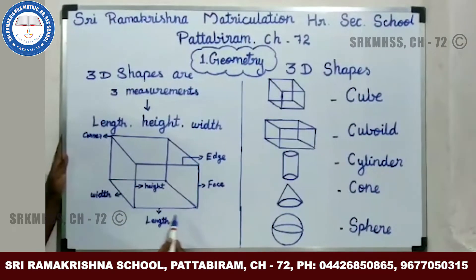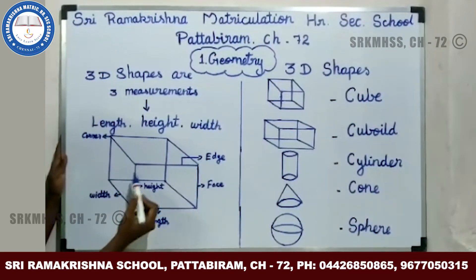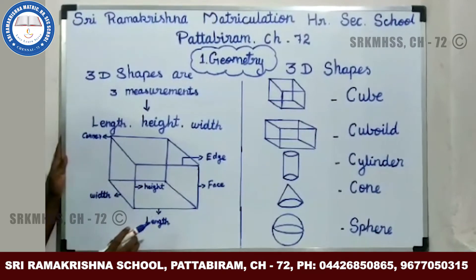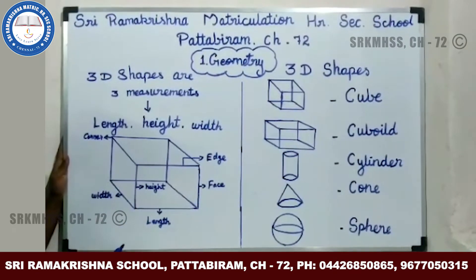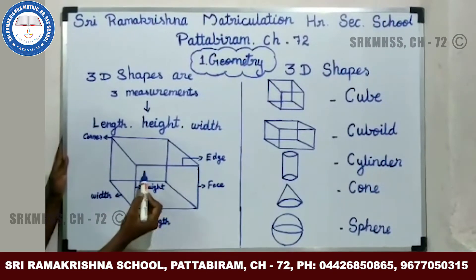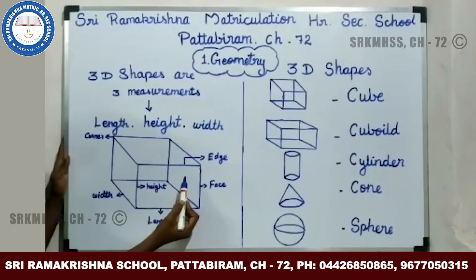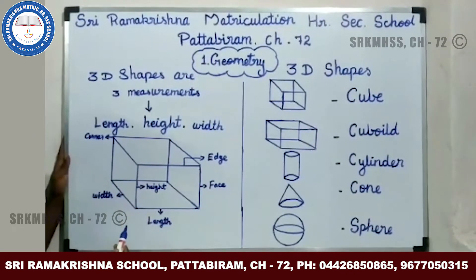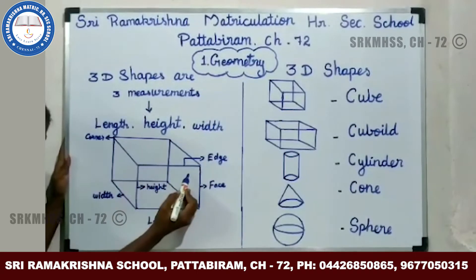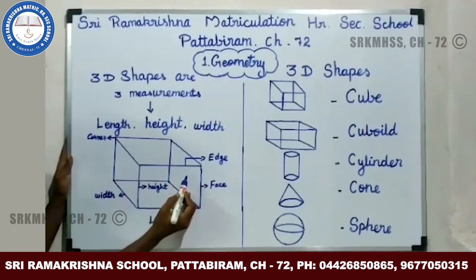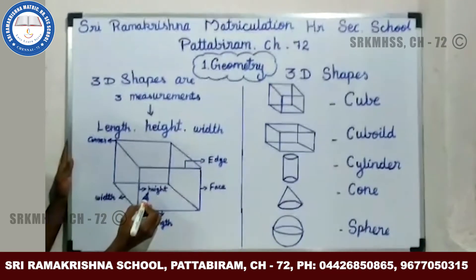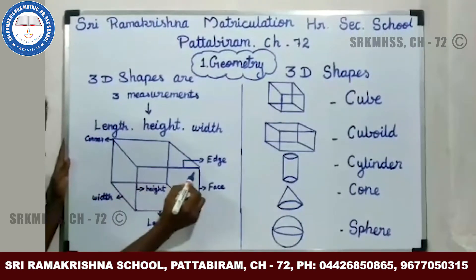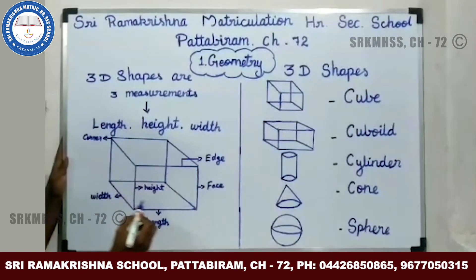This is the face of a cube. A face is a single flat surface. This is the edge of a cube. An edge is a line segment between two faces.